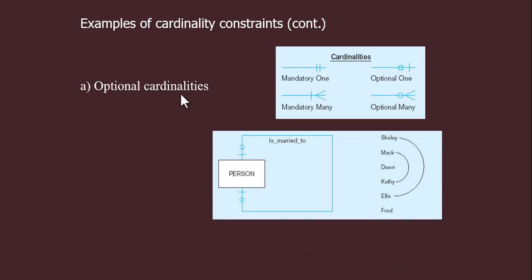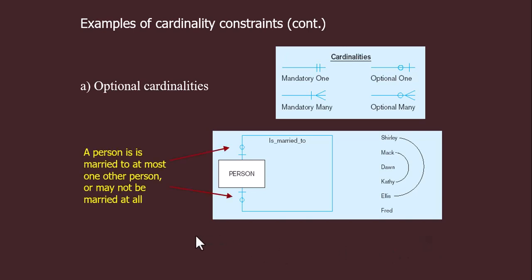This is the optional cardinality — a person is married to a person. This is optional in a unary relationship. A person is married to only one person, and similarly this person is married to this person, but it is not necessary that it should be mandatory. It can be optional because marriage is not mandatory. A person is married to at most one other person or may not marry at all.